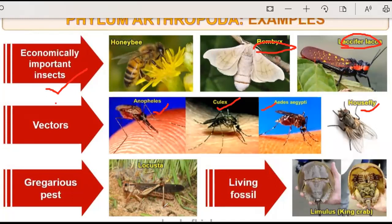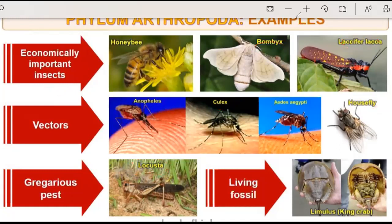There are also gregarious pests. Pests, parasites, and lice are included. And then the organism that acts as Limulus — the king crab — its common name is king crab, and it is called a living fossil. It is one of the oldest organisms.